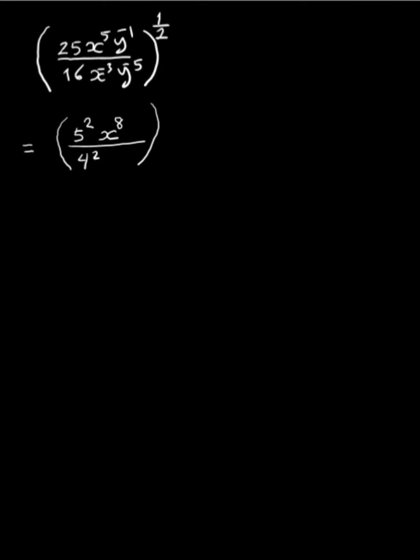If we move y to the power negative 5 up to the numerator, it becomes y to the power positive 5. Multiplying y to the power negative 1 by y to the power 5 gives y to the power negative 1 plus 5, which equals y to the power 4.